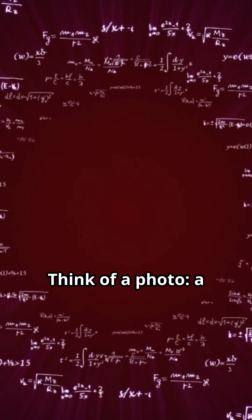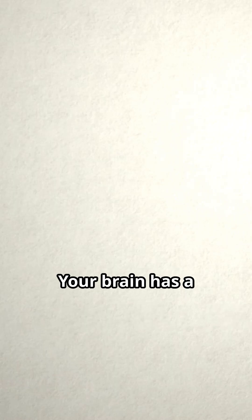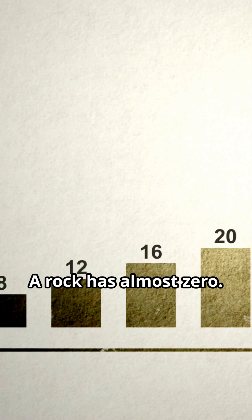Think of a photo: a million pixels have information, but only when they are integrated in a specific way do you see a face. Your brain has a very high phi. A rock has almost zero.